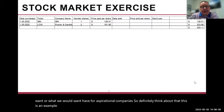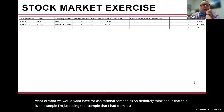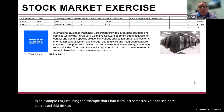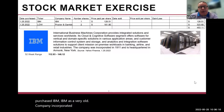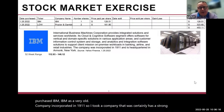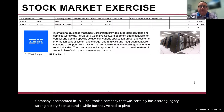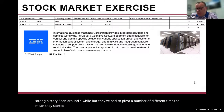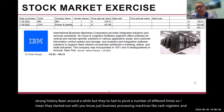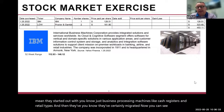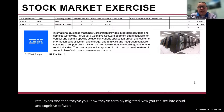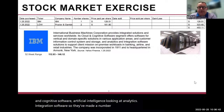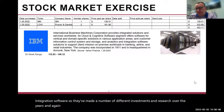This is an example from last semester — I purchased IBM. IBM is a very old company, incorporated in 1911. It certainly has a strong legacy and history, and they've had to pivot a number of different times. They started out with business processing machines like cash registers and retail types, and they've now migrated into cloud and cognitive software, artificial intelligence, and analytics and integration software. So they've made a number of investments in research over the years and pivoted at the right time and place.